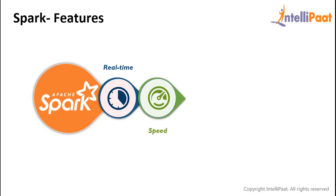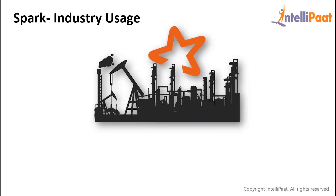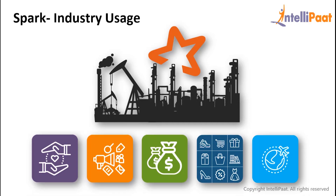Now let us look at some of the features of Spark. Spark provides real-time computation and low latency because of in-memory computation, and is 100 times faster for large-scale data processing. Spark is also polyglot — you can write Spark applications in multiple languages such as Java, Scala, Python, R and SQL. Spark also has powerful caching with a simple programming layer that provides powerful caching and disk persistence capabilities. It also provides multiple deployment modes — it can be deployed through Mesos, Hadoop via YARN, or Spark's own cluster manager. From small startups to Fortune 500 companies, almost every single company started adopting Apache Spark. Industries like media, healthcare, finance, e-commerce and travel are all using Spark intensively.